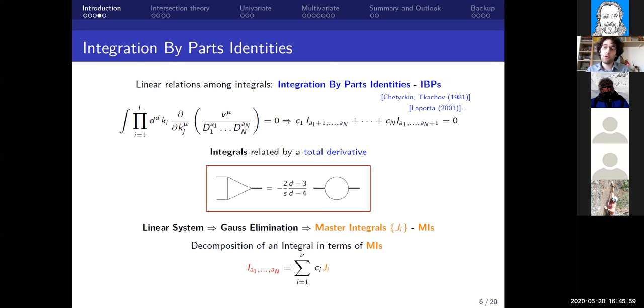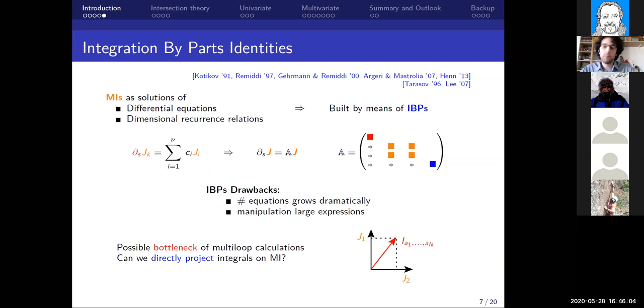After this, one may want to compute them, and a greatly successful procedure is given by differential equations. Basically one can differentiate our master integrals with respect to an external kinematical parameter, such as the Mandelstam invariant s, and then one can reduce this new integral thanks to IBPs in terms of master integrals again. In this way one quickly builds a differential equation system that one can solve to get the value of the master integrals.